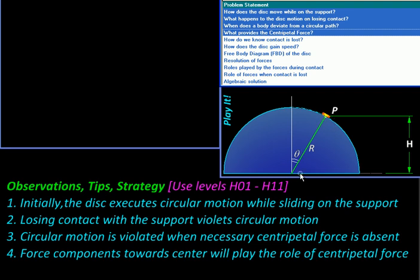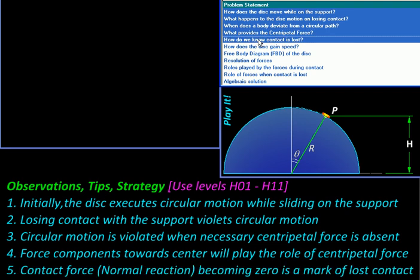Then think of how do we ascertain the contact is lost? Well, any contact causes a contact force called normal reaction. So if this normal reaction between the two bodies becomes zero, that means they have lost contact.